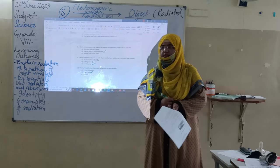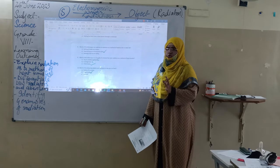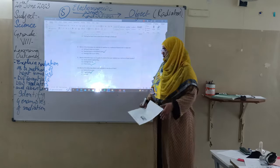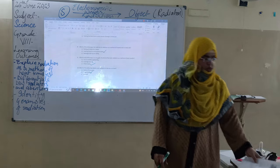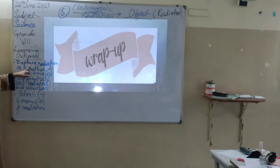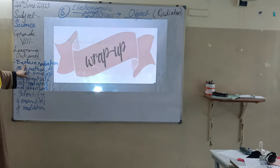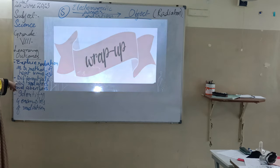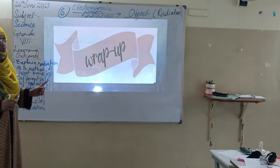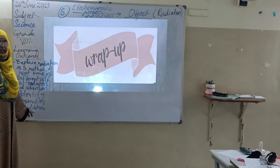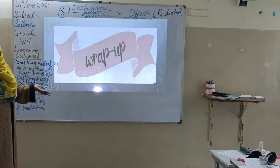Who got 10 out of 10? Very good — most of you. Who got 9 out of 10? That's very good. Anybody got 7? All right, that's okay — now you know the answers. Let's refer back to the learning outcomes. First: explain radiation as a method of heat transfer — are you all able to? Yes. Second: differentiate between radiators, good absorbers, and bad absorbers — yes. Third: identify four examples of radiation — we actually identified more than four.